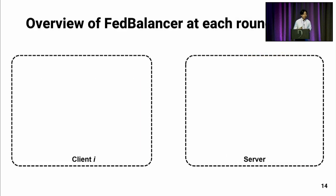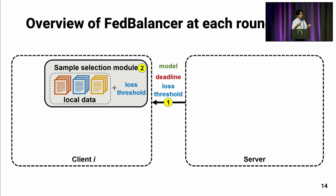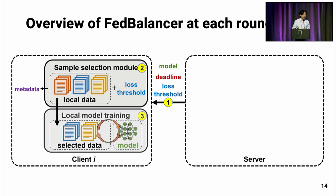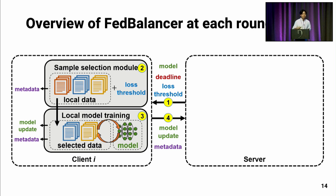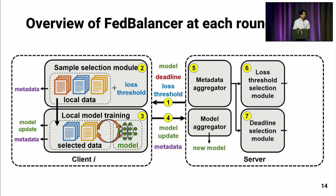Here is an overview of FedBalancer at each round. The server sends three pieces of information to a client: the model, the deadline for this round, and the loss threshold for this round. The loss threshold is a FedBalancer variable that allows the client to select effective data for training. With the selected data, the client performs local model training and outputs a model update, then uploads the model update and metadata to the server. The server outputs the new model, and simultaneously uses the metadata to compute the new loss threshold and deadline for the next round.